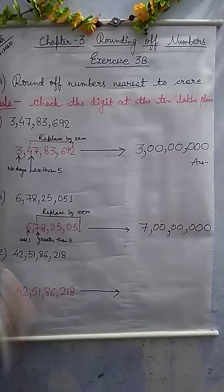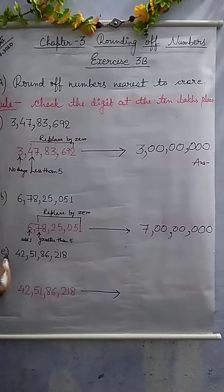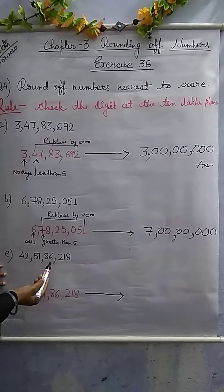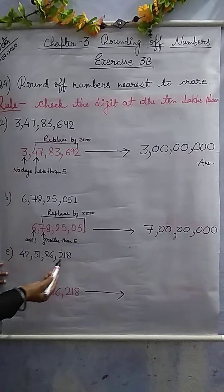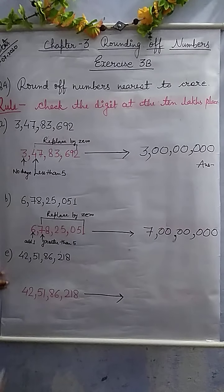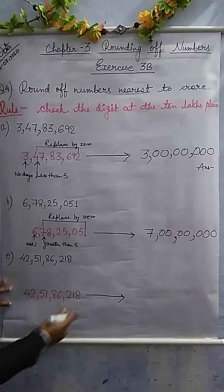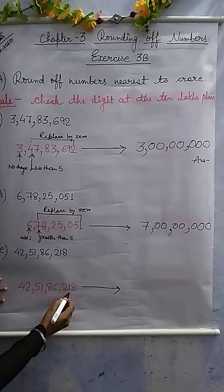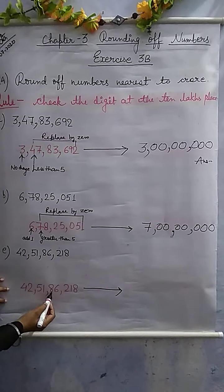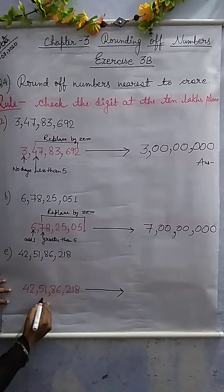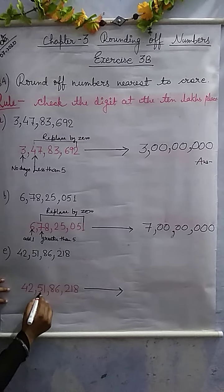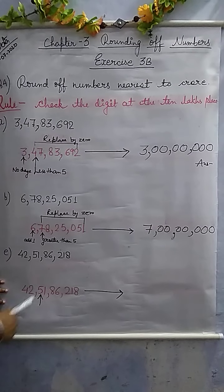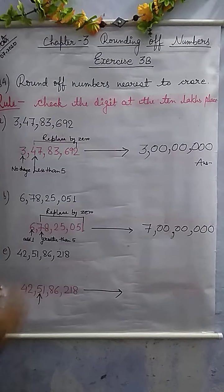Now another case — question number 4e: 42 crore 51 lakh 56,280. We write this and check at the 10 lakhs place. Ones, tens, hundreds, thousands, ten thousands, lakh, ten lakh. And student, we see here the digit is 5 — that is equal to 5.